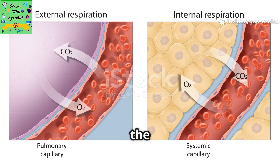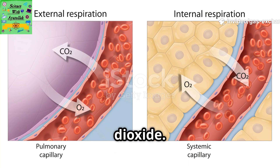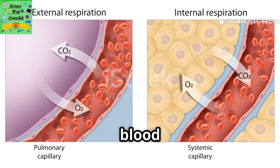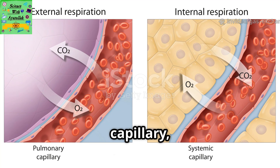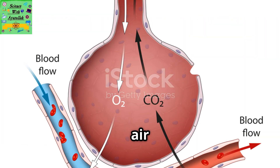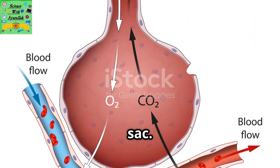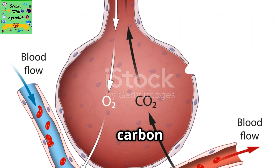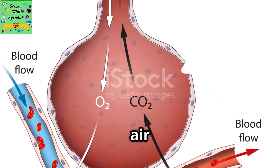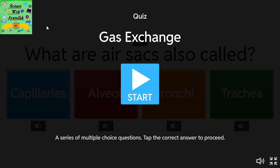Now think about the carbon dioxide. There is a lot of it in the blood in the capillary, and only a small quantity in the air inside the air sac. So, the carbon dioxide diffuses into the air in the air sac.